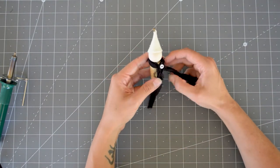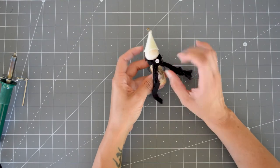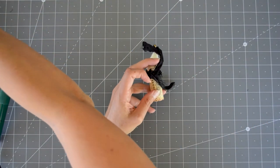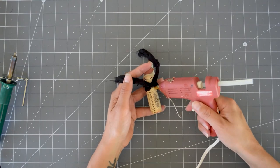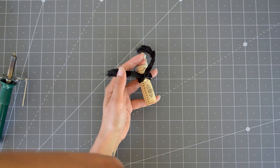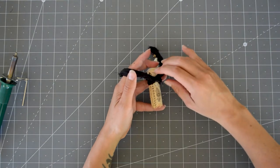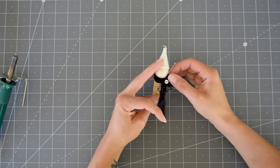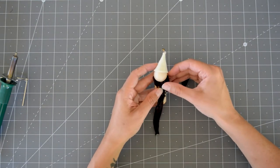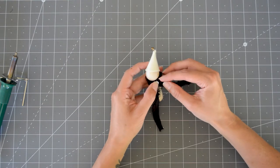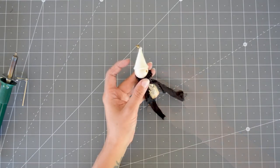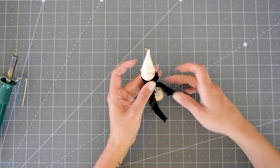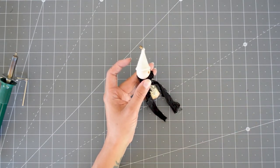There you go. And then I'm going to just put a little bit of hot glue to make sure the button and scarf stay in place. Hold it for a minute and then we'll cut the additional fabric.